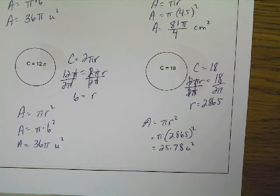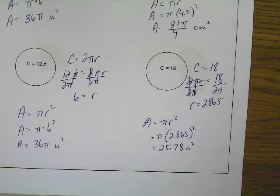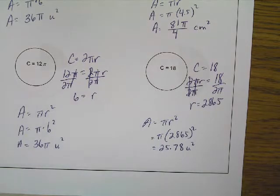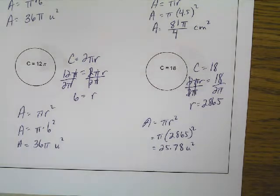So when you have the circumference given to you and they ask you to find the area of the circle, you're going to have to use the circumference to find the radius, and then plug that radius into the area formula to get the area.